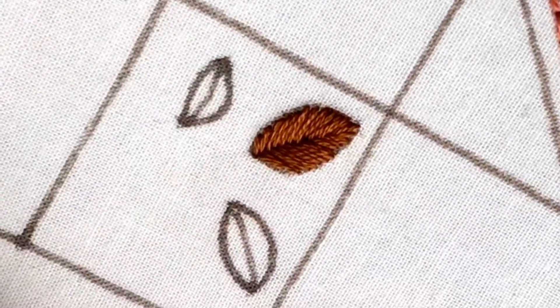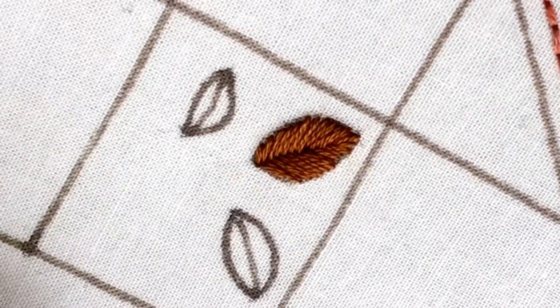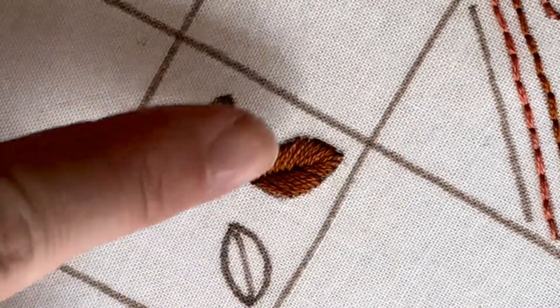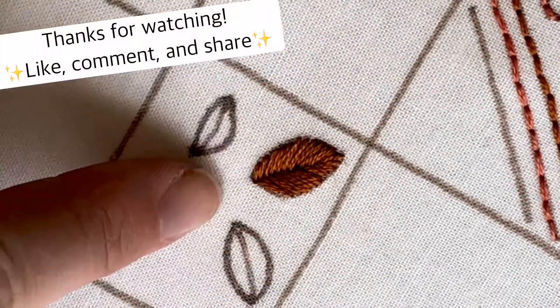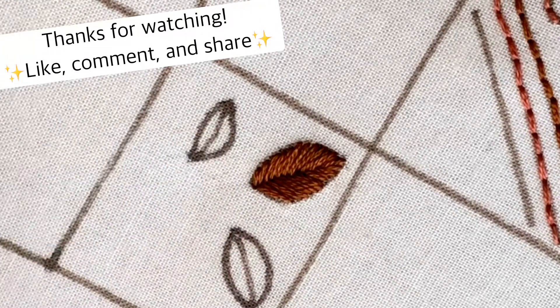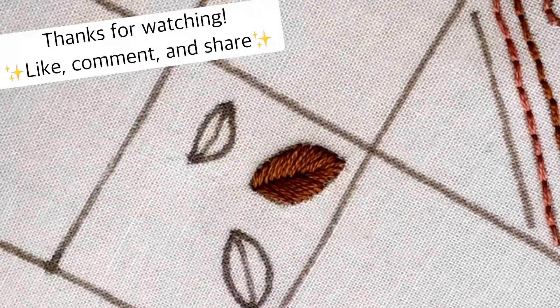And there you have it. That's the fishbone stitch. It's super easy, super fun. Remember to always, when you're starting out, create an outline of the leaf you want to make. And let me know in the comments below if you love this. And I hope you have a beautiful day. Bye!